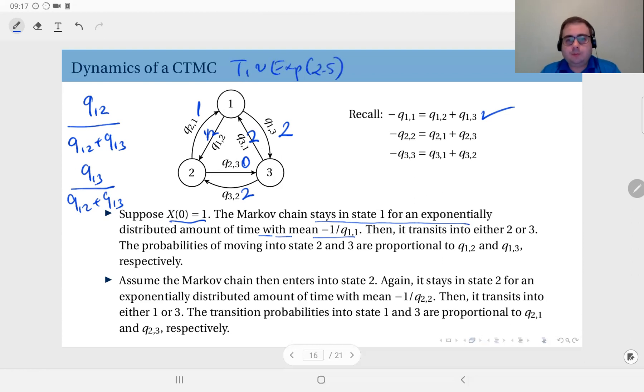Now when the time comes, the Markov chain leaves state number 1, and then it will either transit into 2 or 3. But the transition rate into state 2 is 1 half, and the transition rate to state 3 is 2. So the transition probabilities will be proportional. That means the probability that upon exiting 1, the Markov chain will choose state number 2 is 20%, because that is 1 half divided by 1 half plus 2. And similarly, upon exiting state 1, the probability that the Markov chain chooses state number 3 is 80% because that is 2 divided by 1 half plus 2.